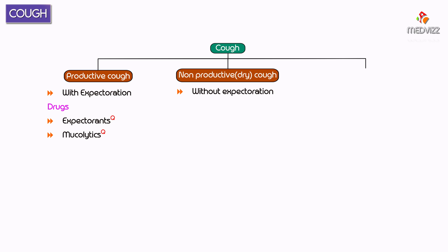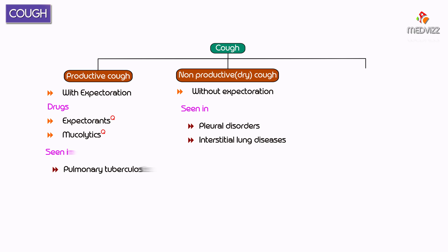The other type is non-productive or dry cough, which is without expectoration. Dry cough is seen in cases of pleural disorders and interstitial lung disease, whereas productive cough is seen in pulmonary tuberculosis, chronic bronchitis, and lower respiratory pathologies except interstitial lung diseases.